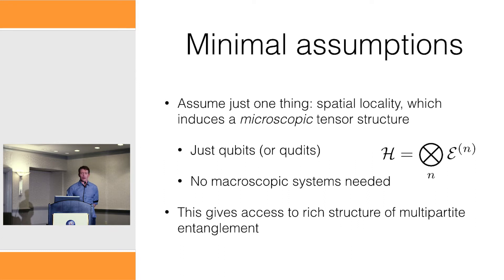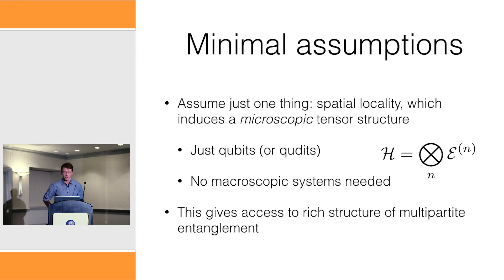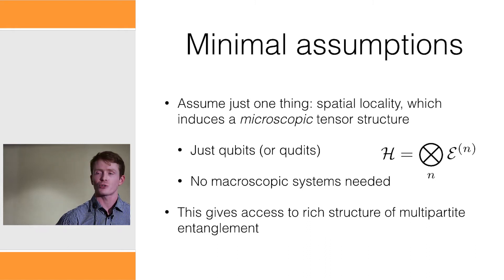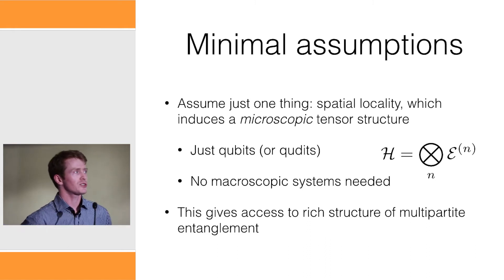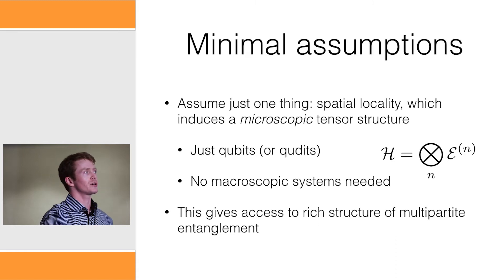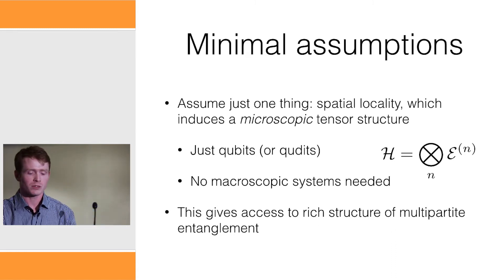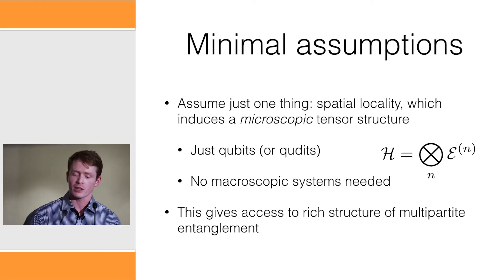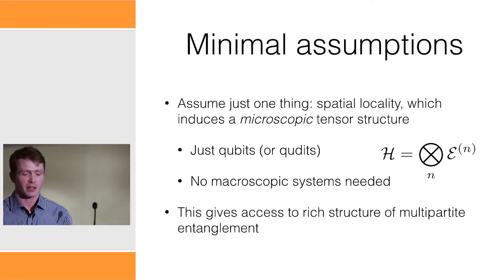What I think is a very promising avenue is to assume one thing: spatial locality. We're going to put gravity aside, and in particular we're going to use the microscopic tensor structure that that induces. You can imagine this as just breaking the world up into qubits, not assuming anything about macroscopic systems. The power of this is that from this very fundamental assumption, it gives you access to the rich structure of multipartite entanglement.